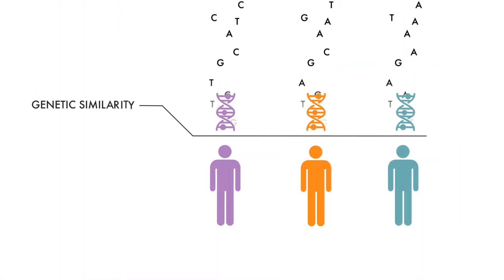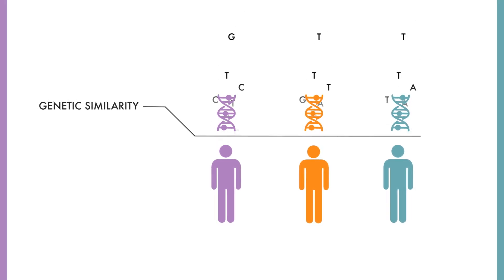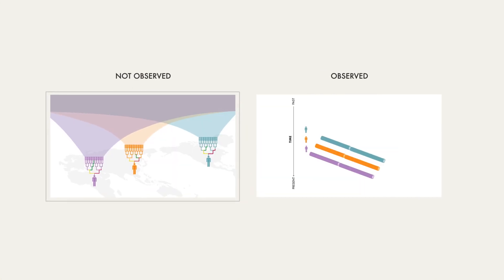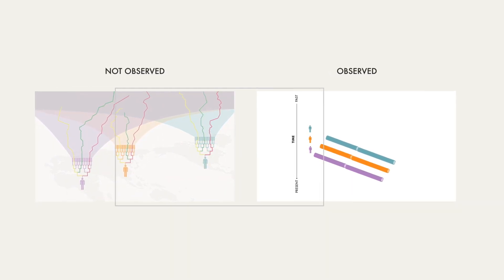These patterns of who is similar to whom, based on their DNA, are known as genetic similarity. It's important to note that we do not directly observe genetic ancestry, that is, the paths through these ancestors.